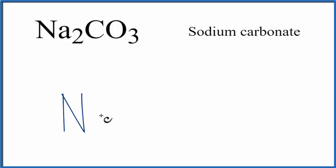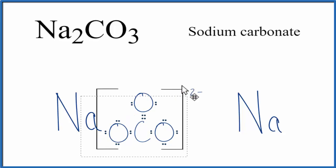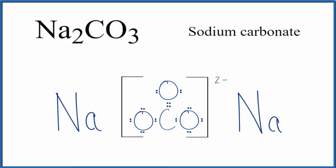So let's write Na, we have two of them, and then we'll put our carbonate ion right between them. Sodium is in group one on the periodic table, so that is one valence electron, which it's lost to the carbonate ion.